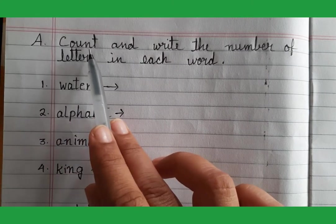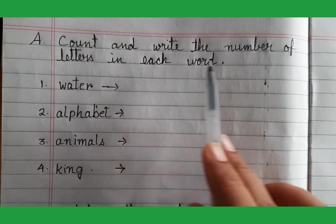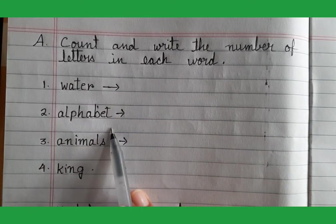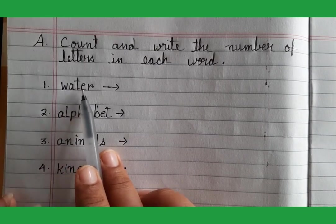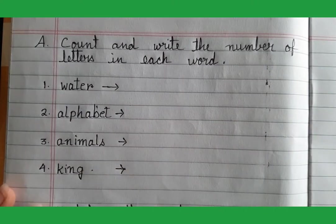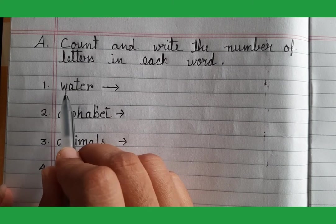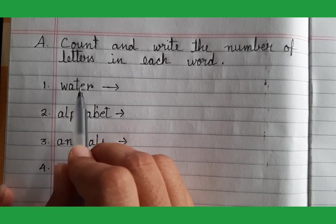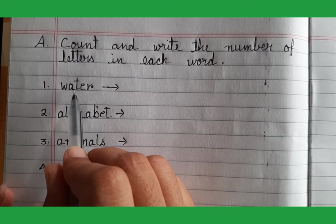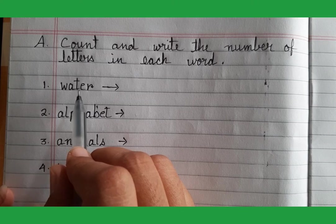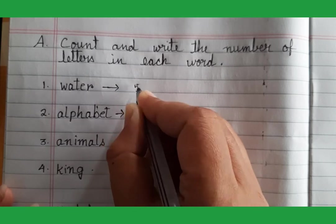Exercise A: count and write the number of letters in each word. In this exercise, we have to count the letters in each word and write their number. Let us count: one, two, three, four, five. In the word 'water,' how many letters are there? Five. So we will write five here.